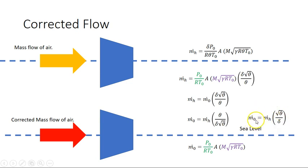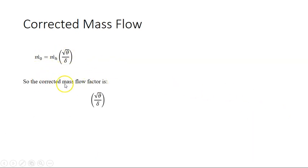So our mass flow at sea level is really our mass flow at the altitude multiplied by this correction factor. So this is the corrected mass flow. You just multiply this value by this fraction here and we get the corrected mass flow. So the correction factor is square root of θ over δ. I hope you found that useful.